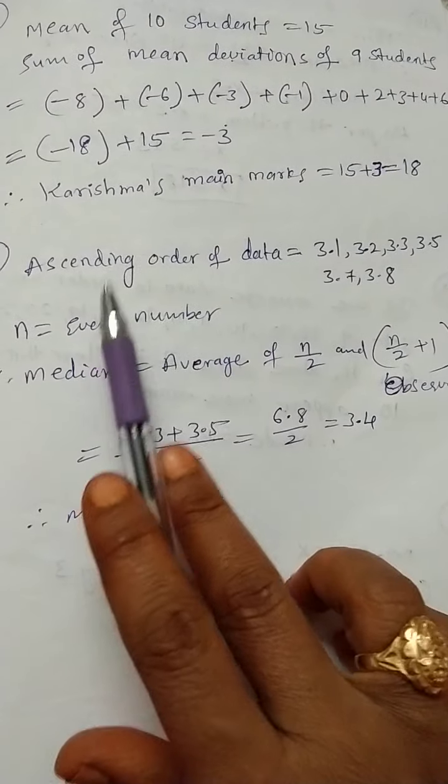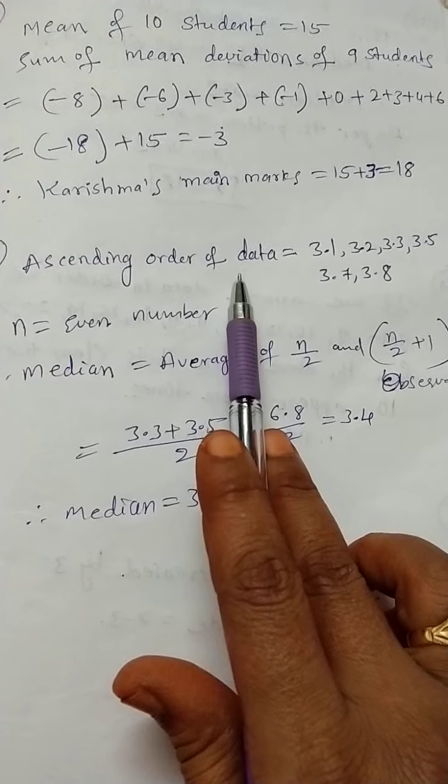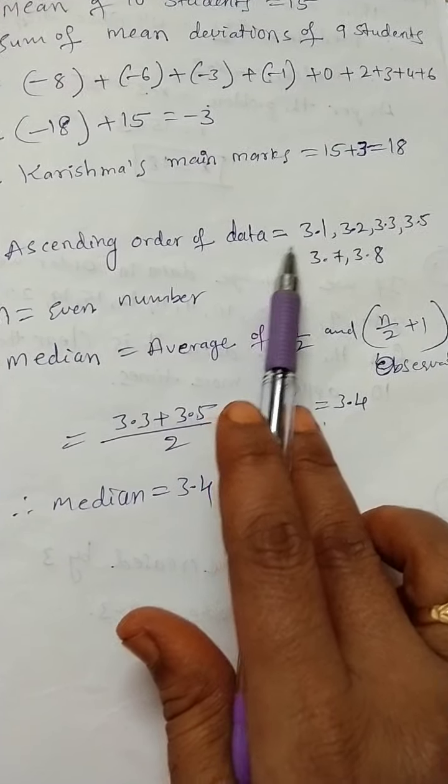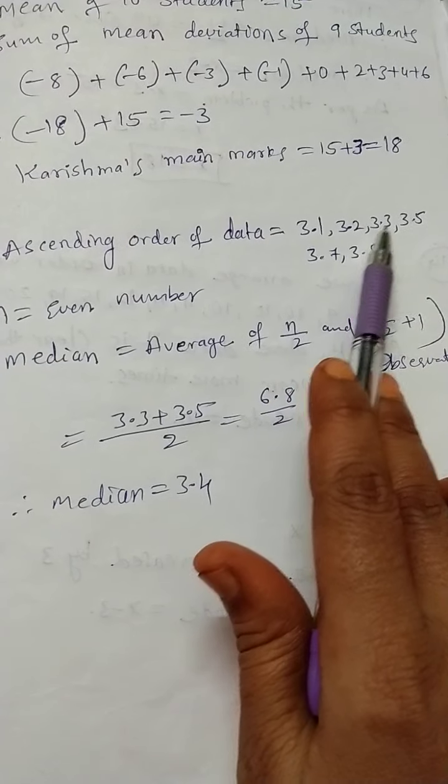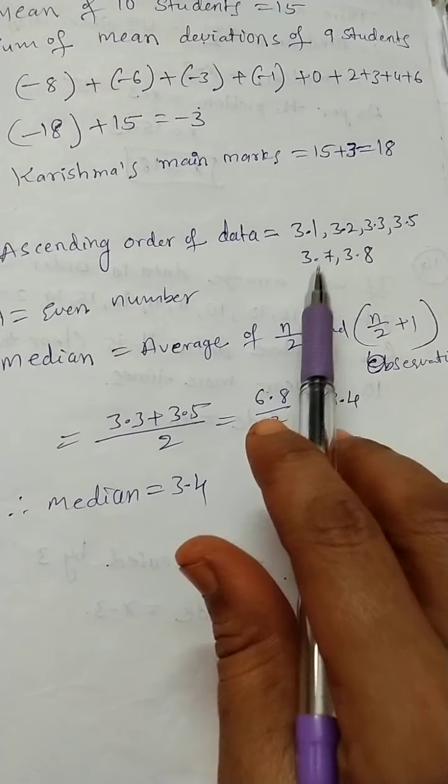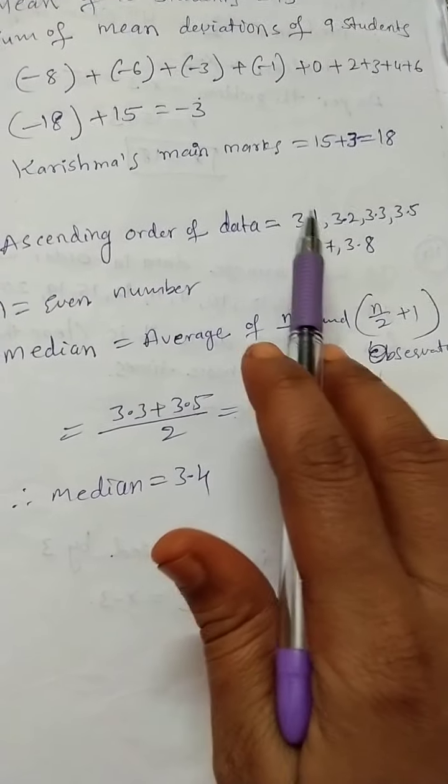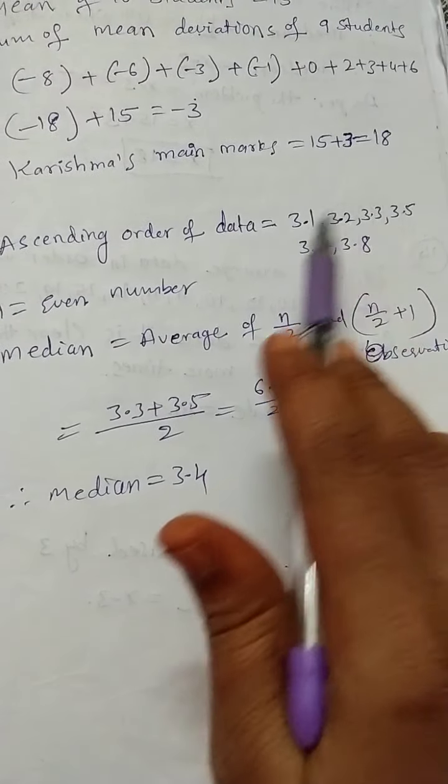The ascending order of the data is 3.1, 3.2, 3.3, 3.5, 3.7, 3.8. Now here the data is even. When counted: 1, 2, 3, 4, 5, 6.